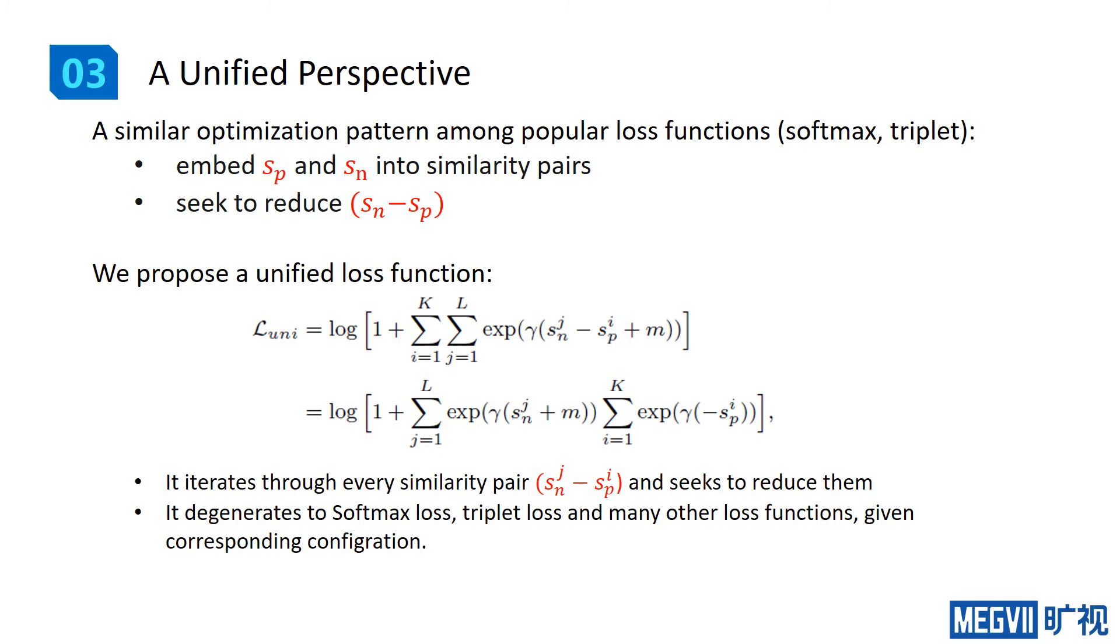Here is the loss function, in which there are k pieces of s_p and L pieces of s_n associated with a single image. Such a loss function is very intuitive. It iterates through every similarity pair and seeks to reduce them.